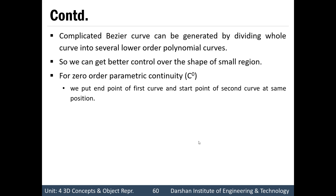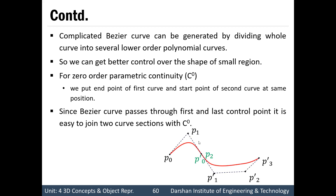For zero-order parametric continuity (C0), we place the end point of the first curve section and the start point of the second curve section at the same position. This is shown in the figure where two curve sections are joined with C0 continuity. This is easy with Bezier curves because they always pass through the first and last control points. So the last control point of the first curve section and the first control point of the second curve section must be at the same position.